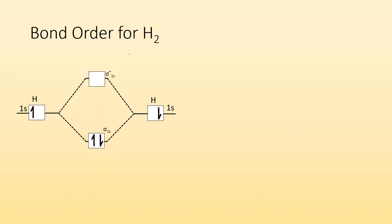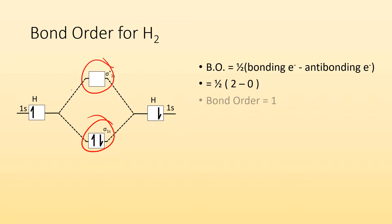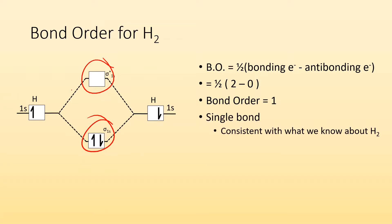Let's look at some examples. For the H2 molecule, bond order equals one half times bonding electrons minus anti-bonding electrons. I have two bonding electrons and zero anti-bonding electrons. So it's one half times (2 minus 0), which gives a bond order of one — a single bond. That's consistent with what we already know about H2.